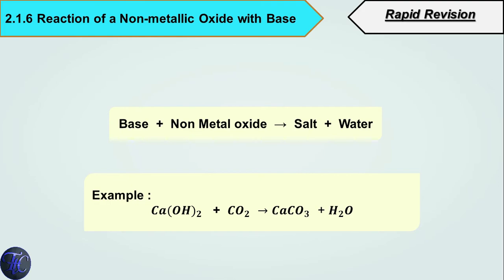Now let's see what happens when a non-metallic oxide reacts with base. Base plus non-metal oxide also forms salt and water, which is the same as a neutralization reaction. For example, calcium hydroxide plus carbon dioxide (non-metal oxide) produces calcium carbonate (salt) and H2O (water). These are the important reactions we should remember in the chemical properties of acids and bases.